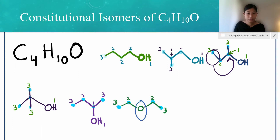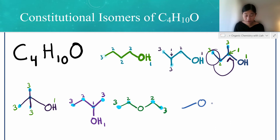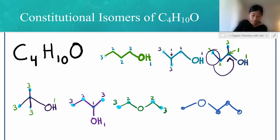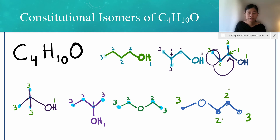Instead of putting the oxygen right in the center with two carbons on each side, we could put it offset — so we have this carbon, then an oxygen, and then three more carbons. Counting: four carbons, and for our hydrogens, three, two, two, and three — again ten hydrogens, four carbons, and one oxygen. So again, this is going to be a constitutional isomer for this molecule.